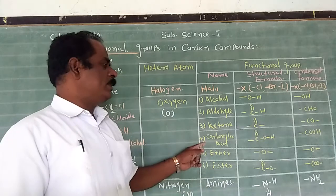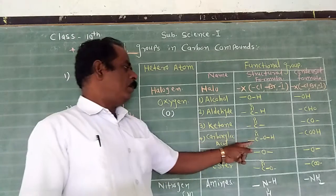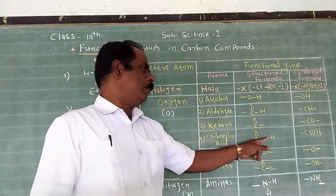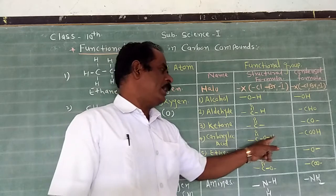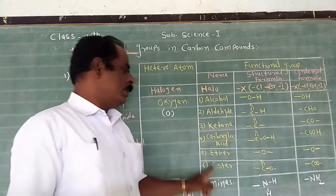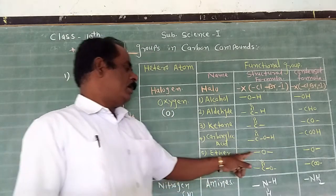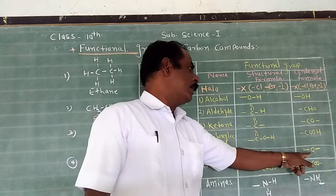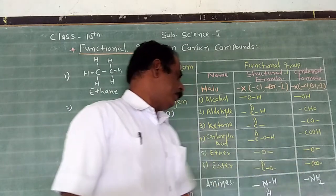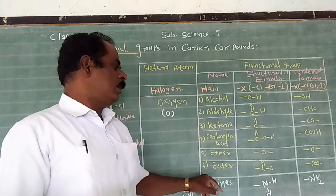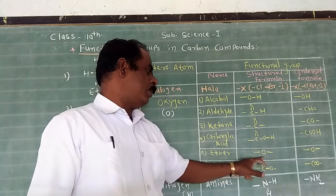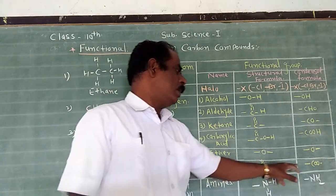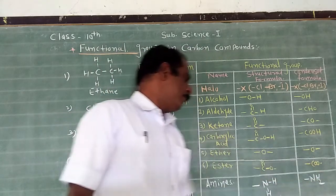For carboxylic acid, the functional group is bond C double bond O, bond O, bond H — condensed as bond COOH. For ether, the functional group is bond O, condensed as bond O bond. For ester, the structural formula is bond C double bond O, bond O, bond — condensed as bond COO.